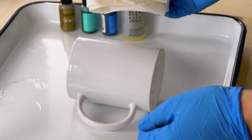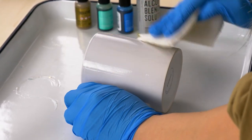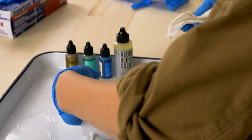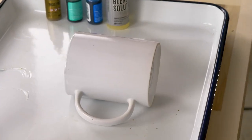Dab some rubbing alcohol on a paper towel and gently clean off the surface of your mug after it's been sanded. Now your mug is ready for alcohol inks.